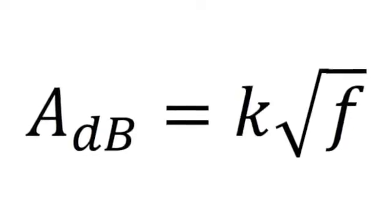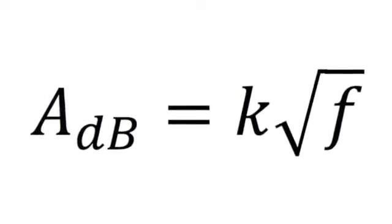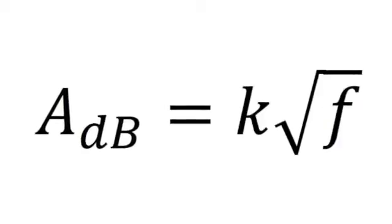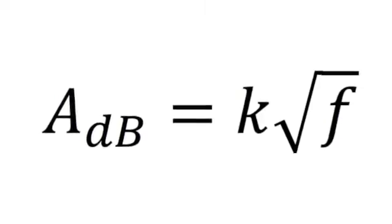The attenuation in decibels is equal to k times the square root of the frequency, where k is a constant specific for each cable.